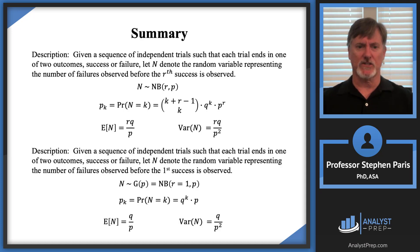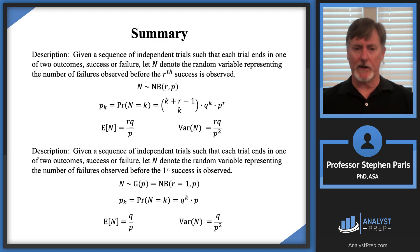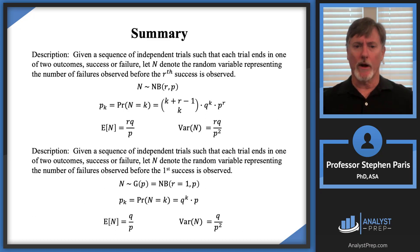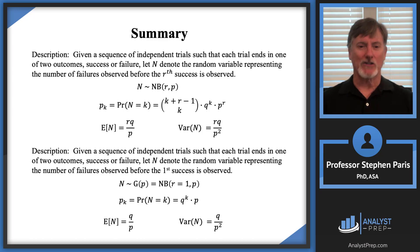The last slide is a summary. The formulas on top are for the negative binomial distribution; the formulas on the bottom are for the geometric distribution. The geometric distribution is the negative binomial with R = 1. Plugging R = 1 into all the top formulas gives all the bottom formulas. That does it for the geometric and negative binomial distributions. I'll see you in the next video.